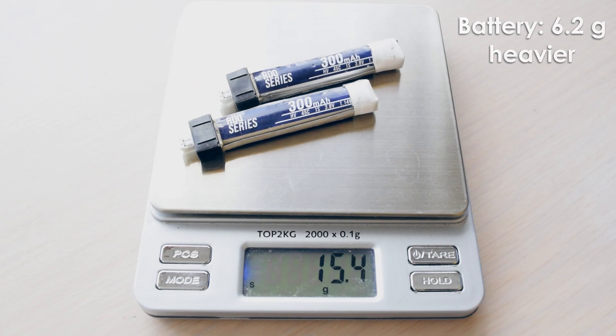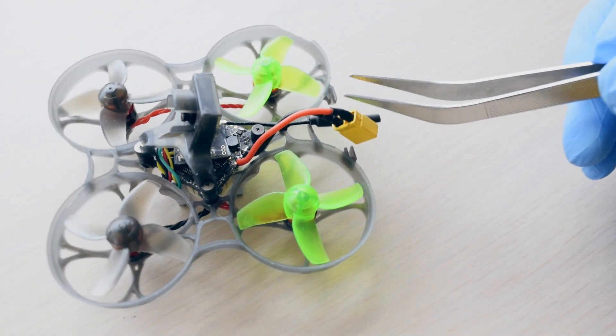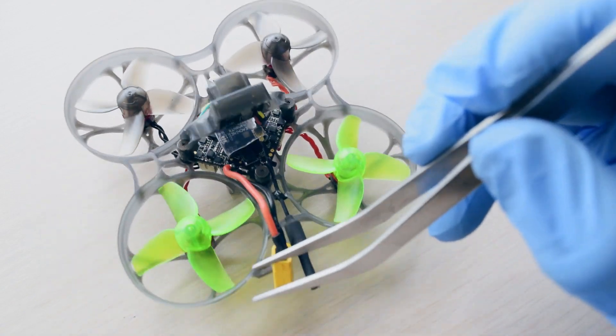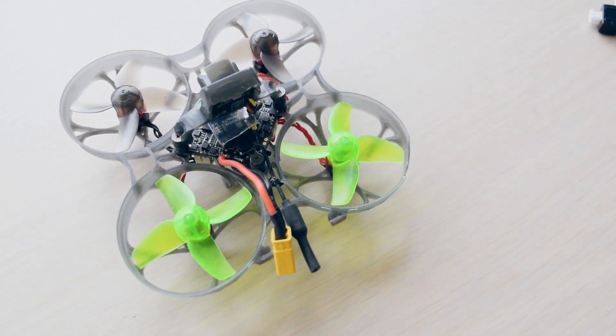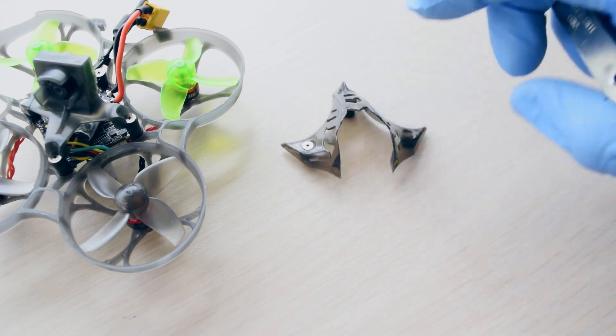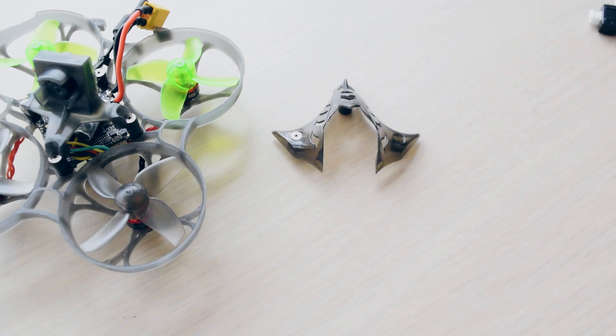We also gained some weight by going with an XT30 connector, and we also gained some weight with the bigger VTX, but we actually saved weight with the new camera canopy, which weighs less than the plastic stuff that comes with the original.